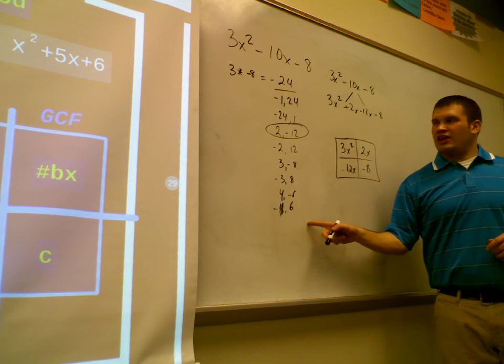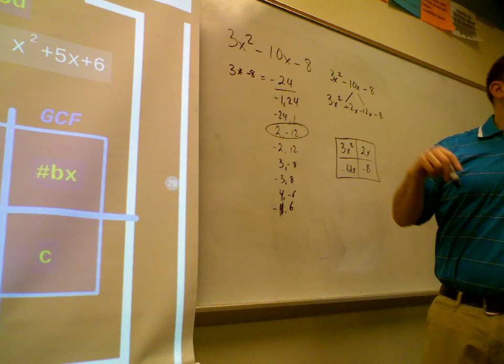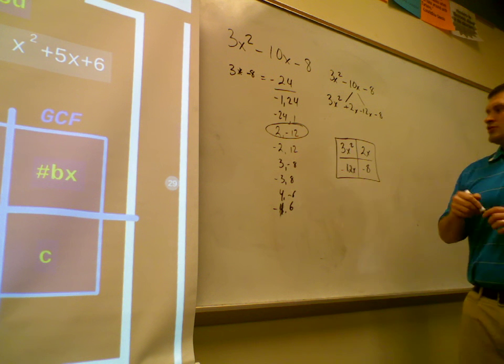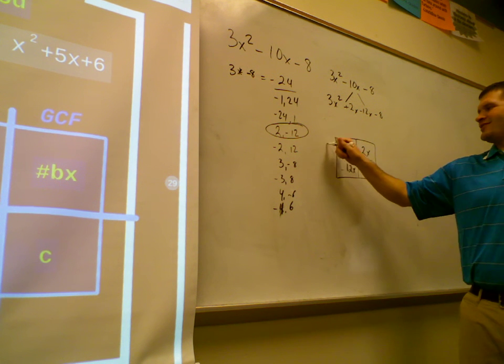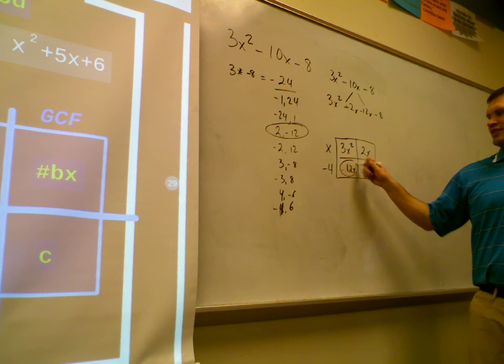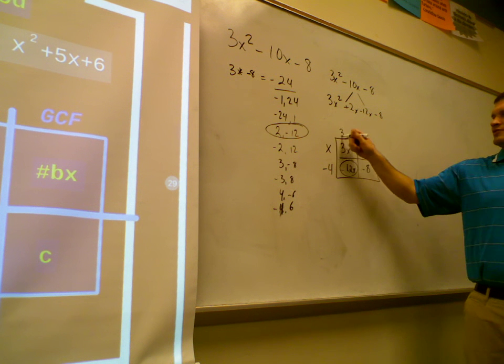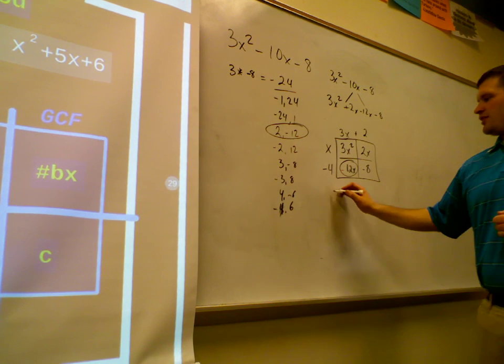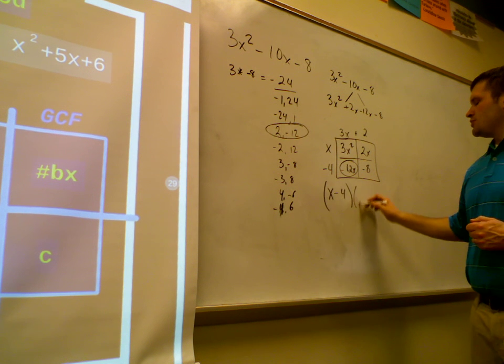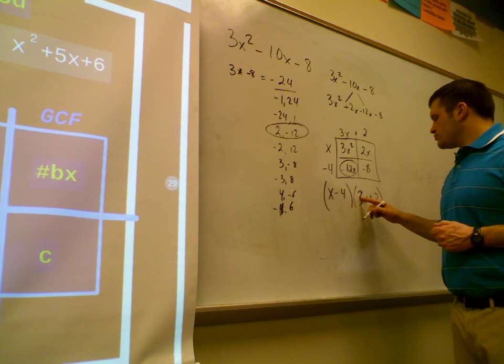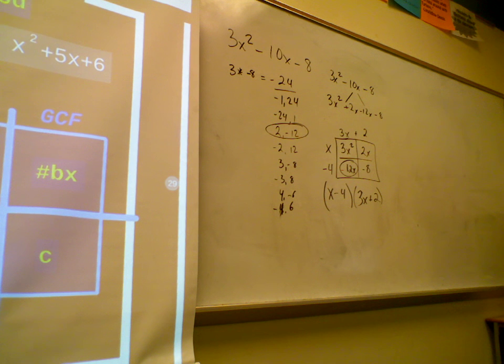Are these factors? No, they can't both be negative. Because two negatives make a positive. What's the GCF here? x. What's the GCF here? Negative 4. Got to be negative because that's negative. What's the GCF here? 3. Right here. 2. That means my factors are x minus 4 and 3x plus 2. Does that make sense? The order does not matter. So if you have 3x plus 2, then x minus 4, that's fine.